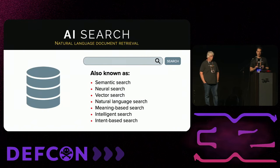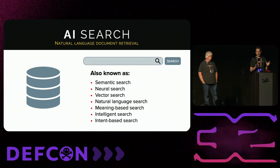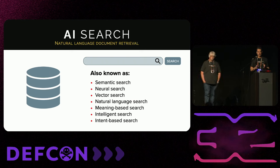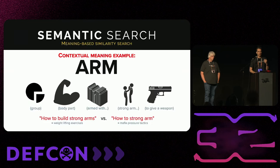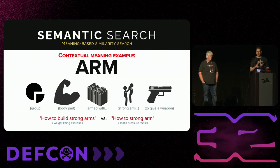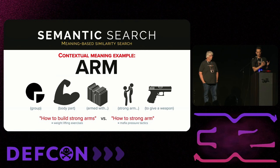To make all this work, you need a more intelligent search than what we typically do — call it AI search or semantic search. The most popular approach right now is vector search. These AI search techniques are important because they differentiate between different meanings of words; they can understand a sentence in context, like when 'arm' means a division of an organization versus a body part or a verb.